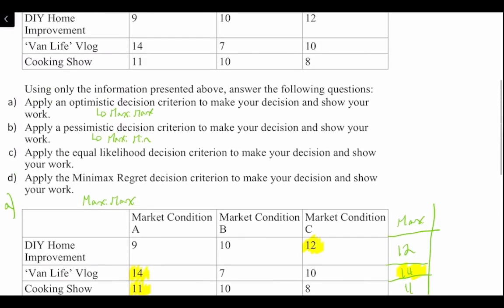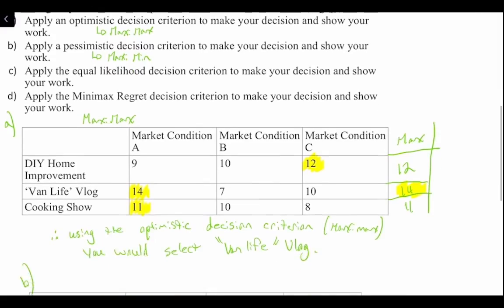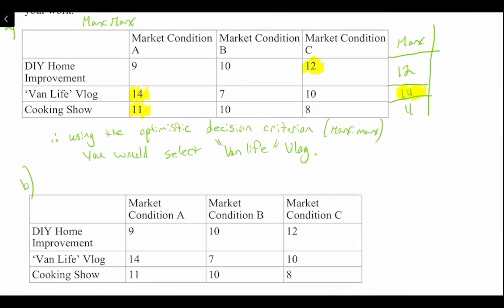Now for Question B — the pessimistic decision criterion, also known as the maxi-min. When we apply the pessimistic criterion, we're looking to identify the minimum payoff for each alternative and then select the alternative that maximizes our minimums.